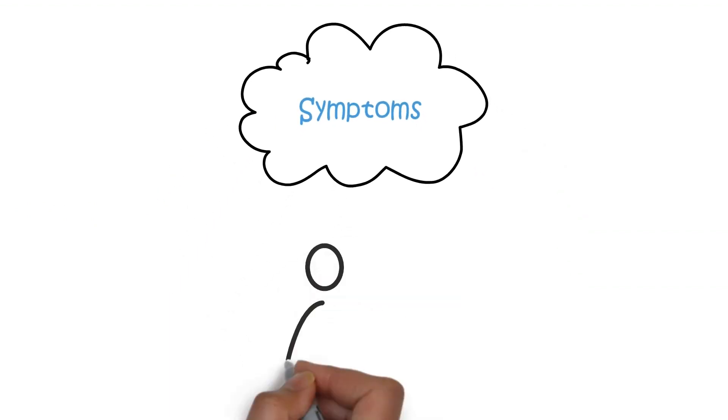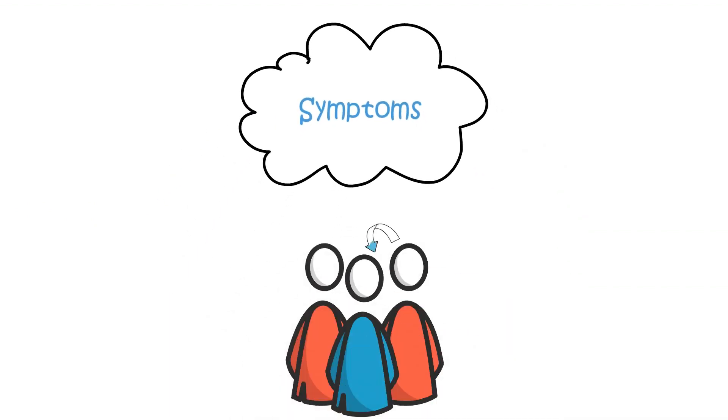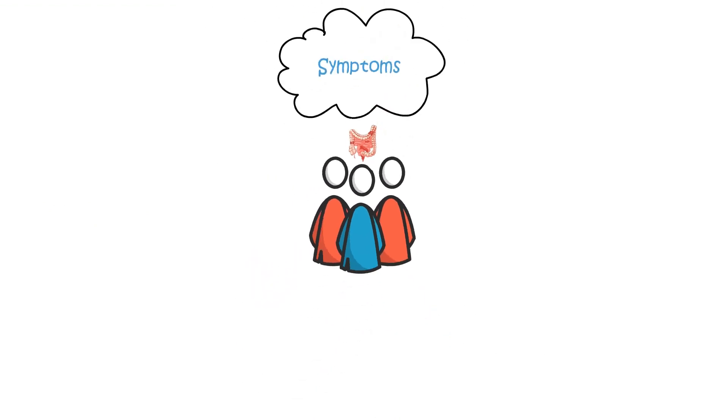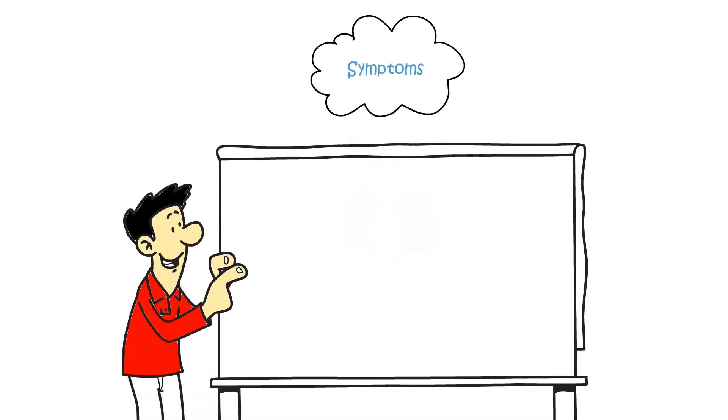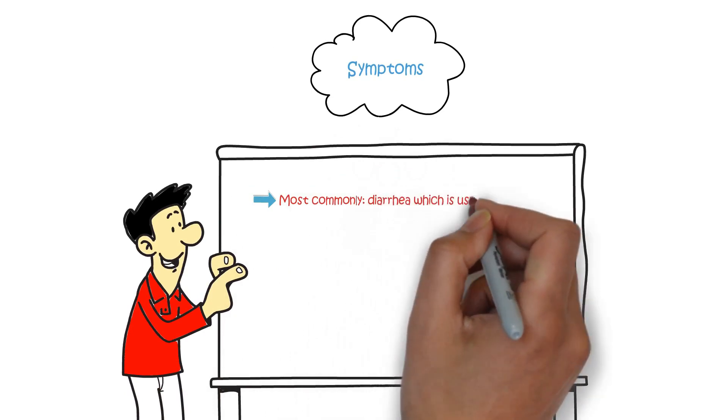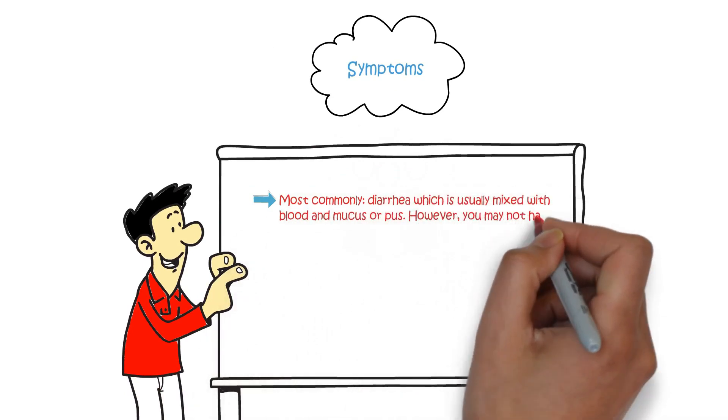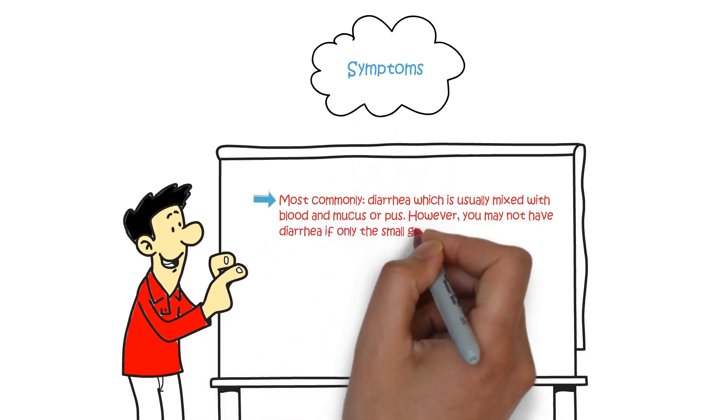Symptoms. The symptoms of Crohn's during a flare-up vary from person to person and depend on the severity of the disease. Common symptoms include, most commonly, diarrhea, which is usually mixed with blood and mucus or pus. However, you may not have diarrhea if only the small gut is affected.